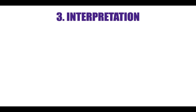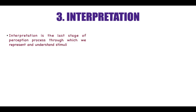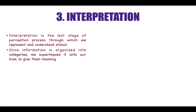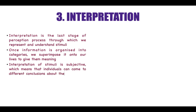The third part of the perceptual process — the third stage — is interpretation. This is the last stage where we represent and understand the stimuli. All the information that we have selected and organized in our brain, we put into categories and superimpose it onto our lives to give it a meaningful picture.